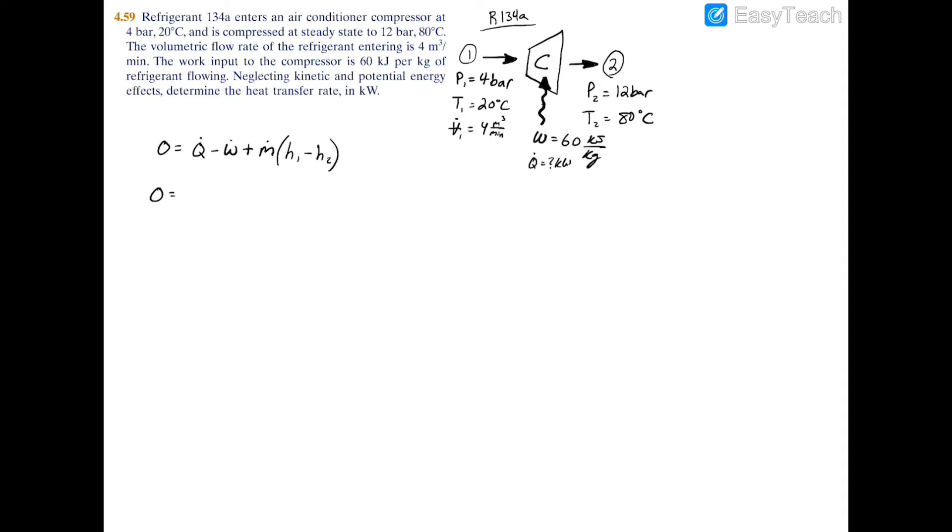Minus the power, so remember that power, which is just W dot, equals the work, which is just w times the mass flow rate m dot. In this case we actually have the work per unit mass, which would just be w over m, so to find our power we're going to have to find our mass flow rate.